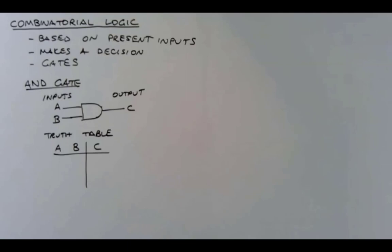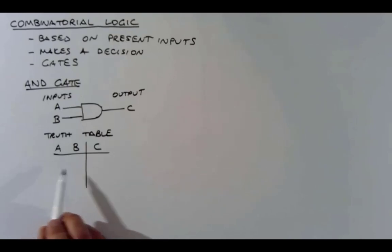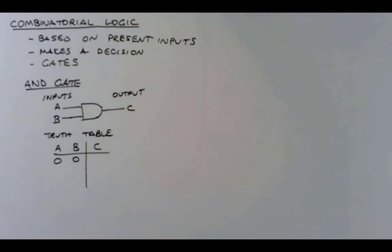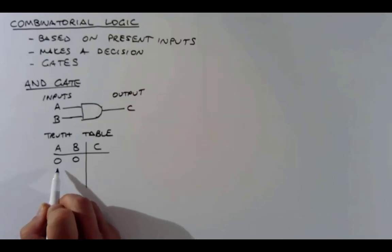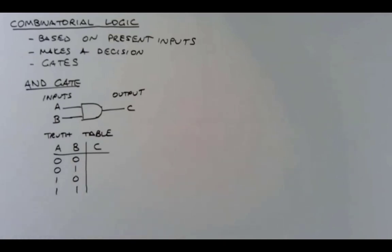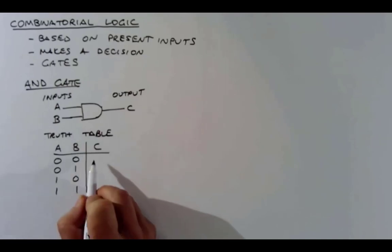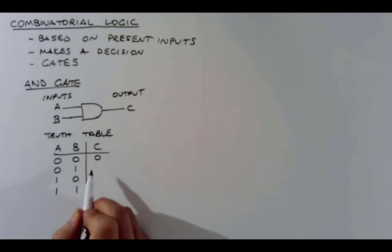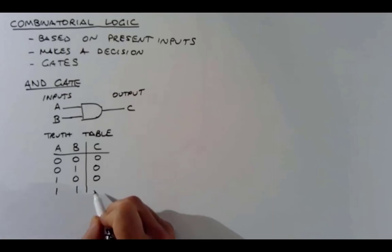On the left you list all possible combinations of inputs; on the right is the corresponding output. One way to list all possible combinations is to start with zeros and count up in binary: 0,0 then 0,1 then 1,0 then 1,1 — which in decimal is 0, 1, 2, 3. The AND gate answers: are both of my inputs true? Row by row: No, No, No, Yes. So the output is only 1 when both A and B are 1.